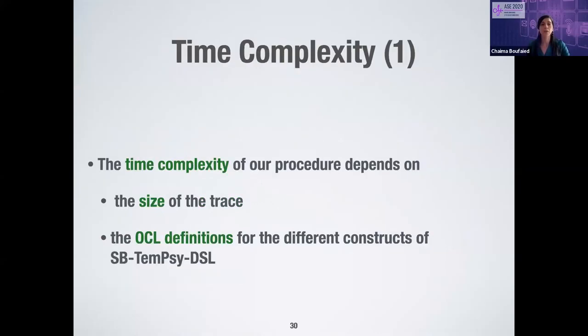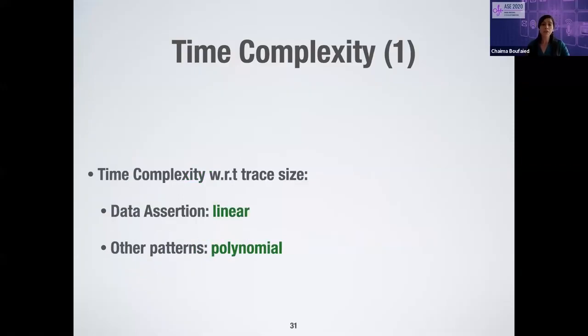The time complexity of our procedure depends on two factors: the size of the trace, and the OCL definitions for the different constructs of our language. For example, the evaluation of the data assertion pattern — the simplest supported pattern — is linear in the size of the trace. However, the evaluation of other patterns such as spike, oscillations, rise sign, and order relationship between signals is polynomial in the size of the trace.